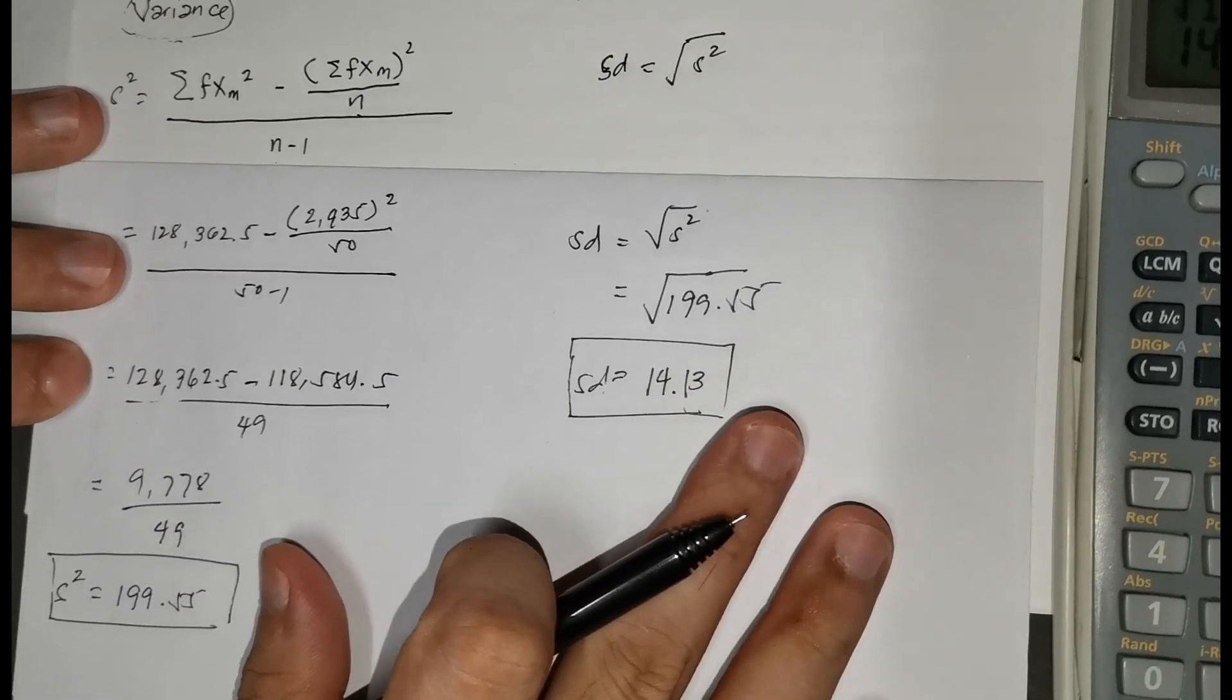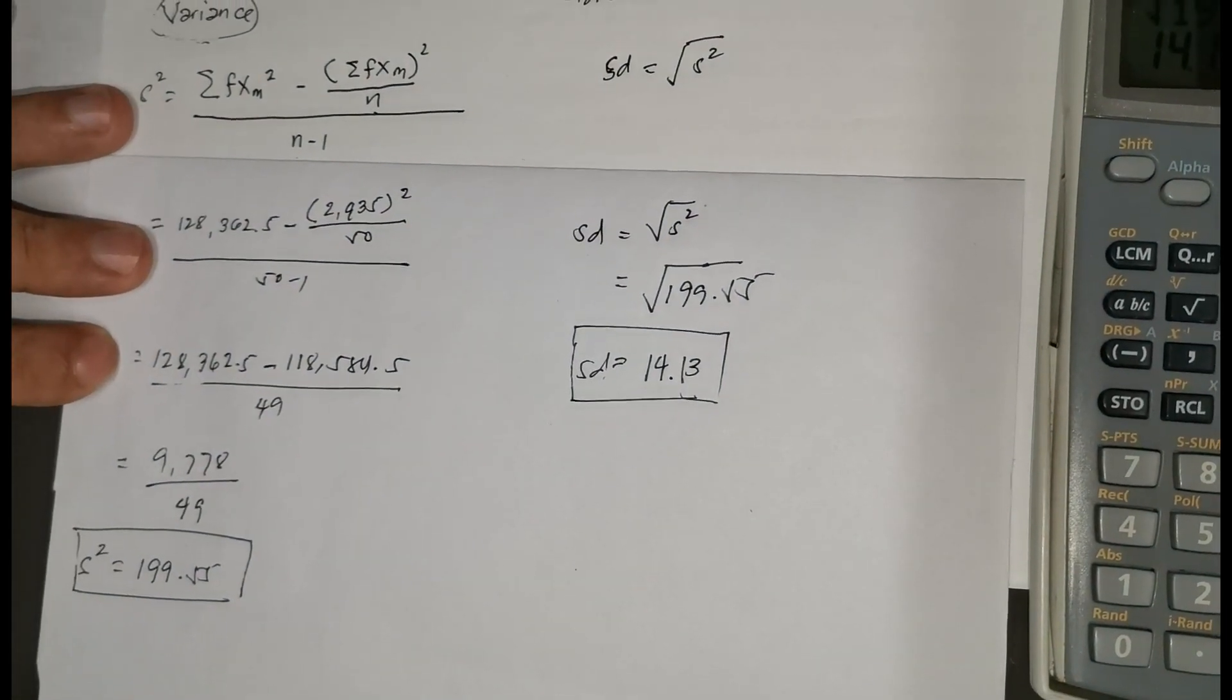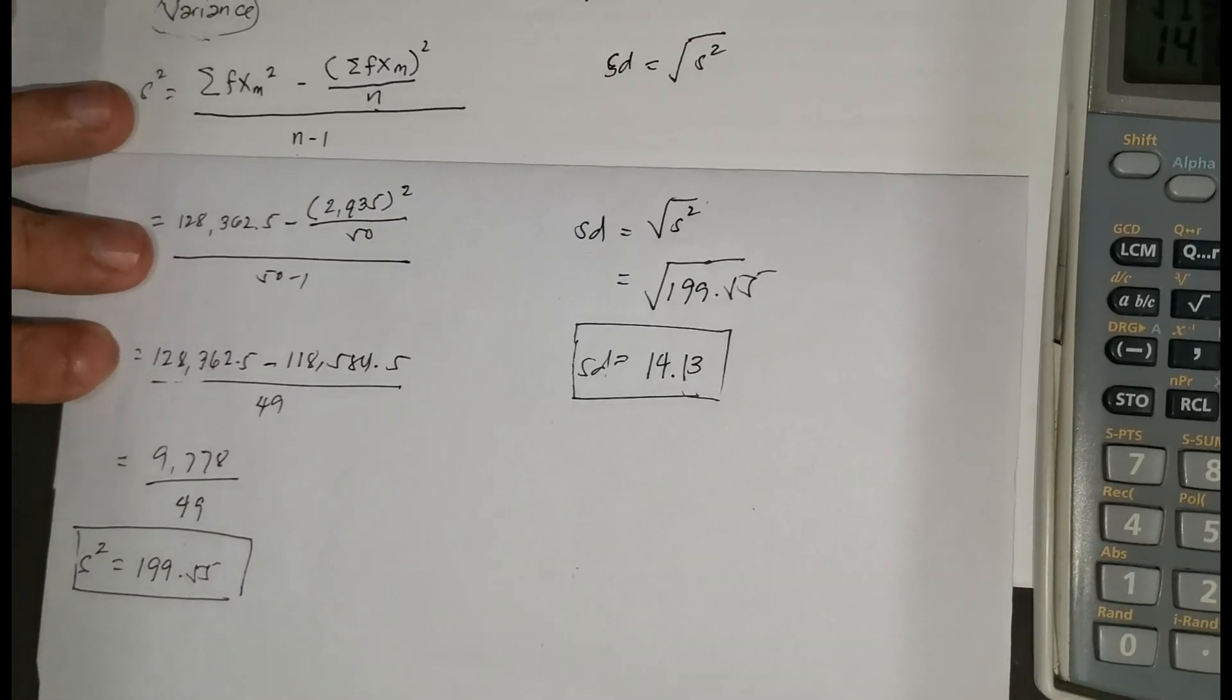That's the complete steps and the whole process of solving variance and standard deviation for grouped data. What you need is your calculator, and make sure to complete carefully the columns in your table and properly substitute the values in the given formula. In our example, 14.13 means that in the given data set, each score is 1 standard deviation away from the mean equivalent to 14.13 as it deviates from the mean.